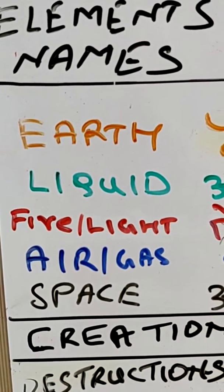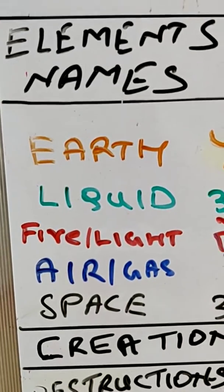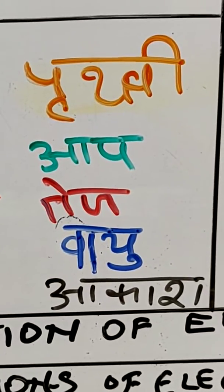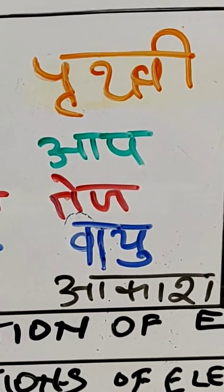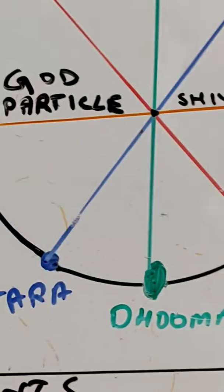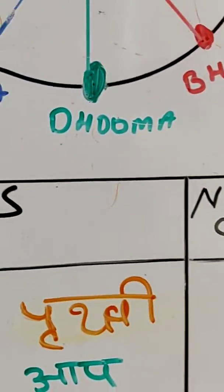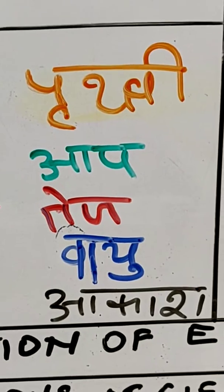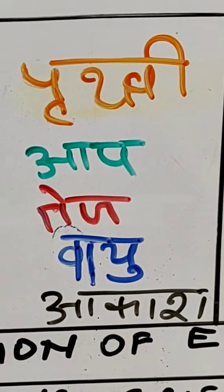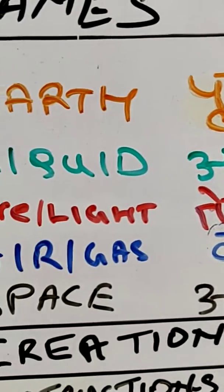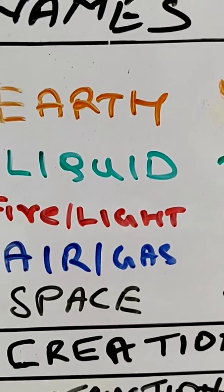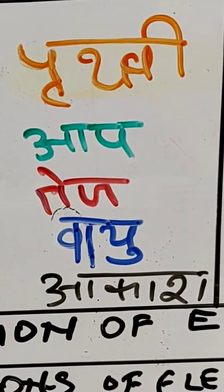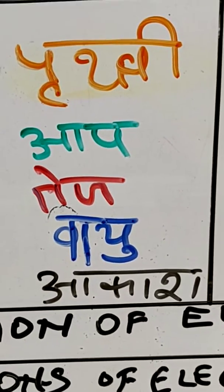In English we call them earth, liquid or water, fire or light, air or gas, and space. But Lord Shiva says that our consciousness is very old. Because our consciousness is very old, if you want to affect an element or change it — as we have seen that one element changes into another — if you want to change the nature or mood of another person, you have to use the elements. But if you use the elements with English names, they are not going to work. You have to use the original Sanskrit names.